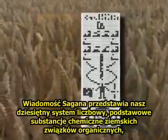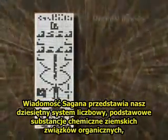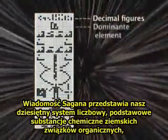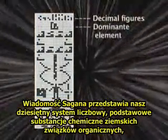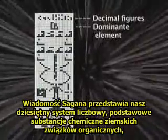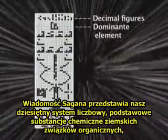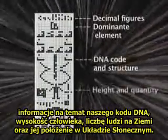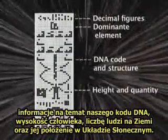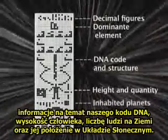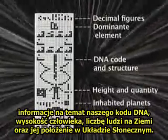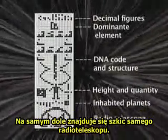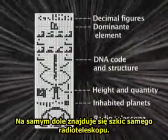Sagan's message explained our calculation system, the dominant chemical substances within the elements that create life on Earth, our DNA code, human height and quantity, and that we live on the third planet in our solar system. And lastly, a sketch of our radio telescope.